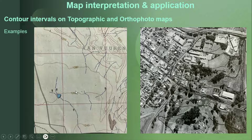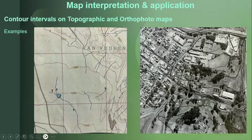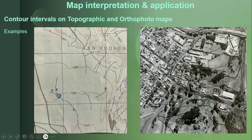If you say 1260 minus 1240, the difference is 20 meters, which gives us the 20-meter contour interval for the topographic map. For your orthophoto map, starting at this contour line which is 1660 going to 1680, you can see that you add 5 meters on each contour line: 1660, 1665, 1670, 1675, and then 1680 meters.